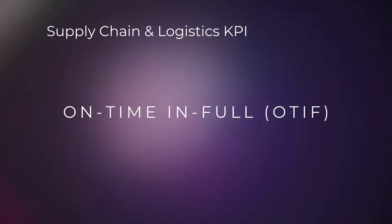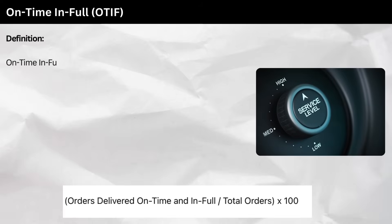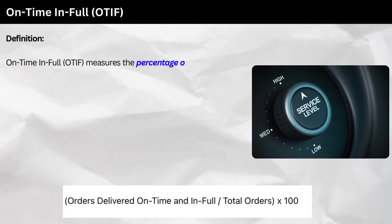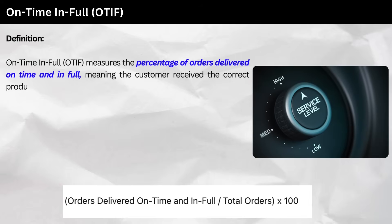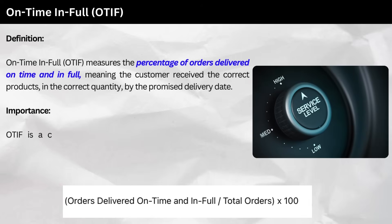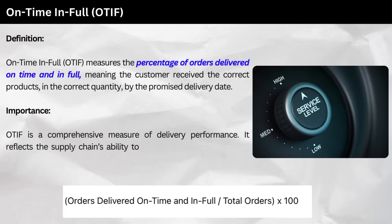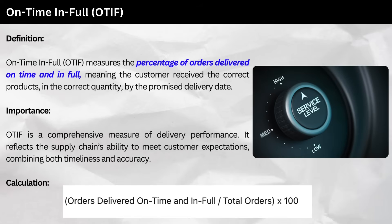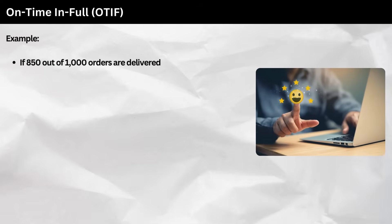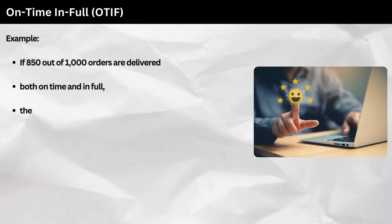9. On-Time-In-Full (OTF). Definition: On-Time-In-Full measures the percentage of orders delivered on time and in full, meaning the customer received the correct products, in the correct quantity, by the promised delivery date. Importance: OTF is a comprehensive measure of delivery performance. It reflects the supply chain's ability to meet customer expectations, combining both timeliness and accuracy. Calculation: as follows. Example: if 850 out of 1,000 orders are delivered both on time and in full, the OTF rate is 85%.